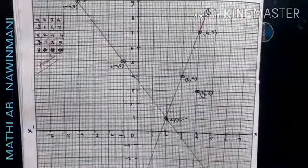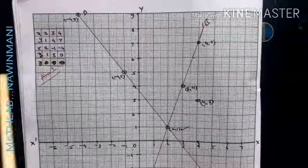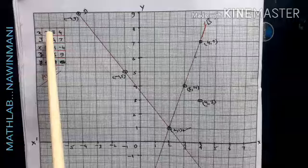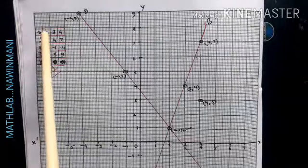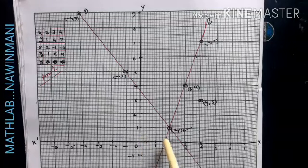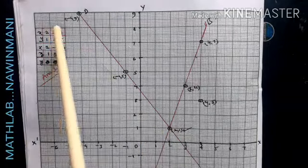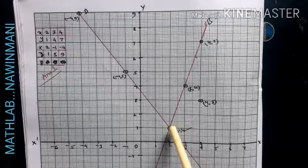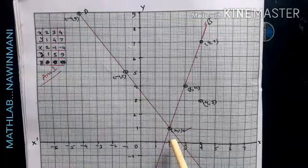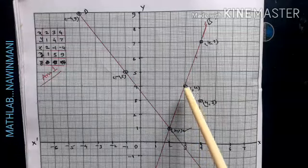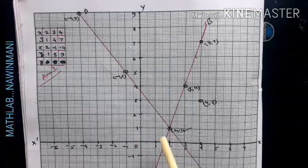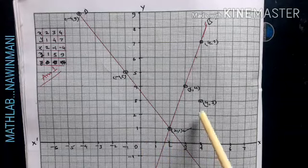Now we will plot the points. First equation, we have three points. One is 2,1 - x go plus 2 from 0, 1, 2, and then y go 1, 1, so here 2,1. Second is 3,4: 1, 2, 3, and 1, 2, 3, 4. Third one is 4,7: 1, 2, 3, 4, and 1, 2, 3, 4, 5, 6, 7.